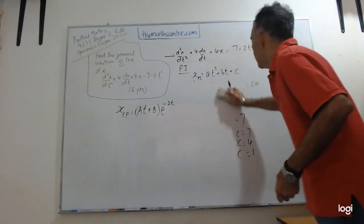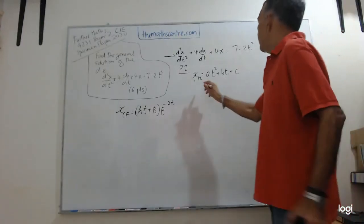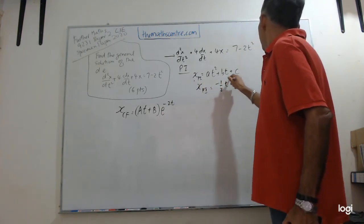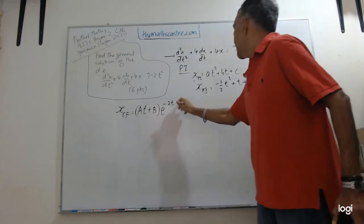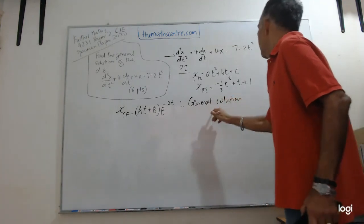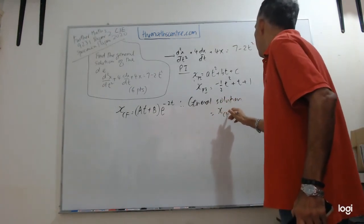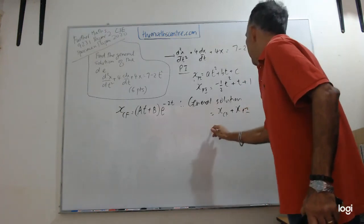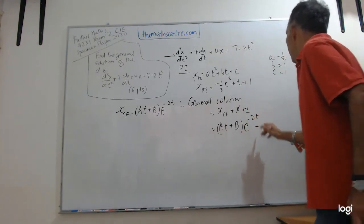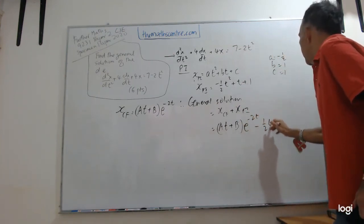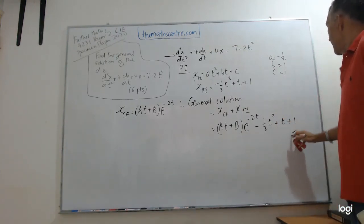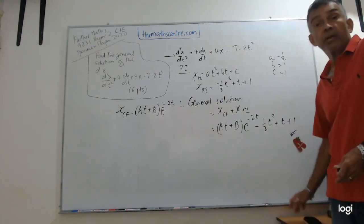Now I have my particular integral: x_PI = -1/2 t² + t + 1. Therefore, my general solution is my complementary function plus my particular integral: (At + B)e^(-2t) - 1/2 t² + t + 1. And we are done.